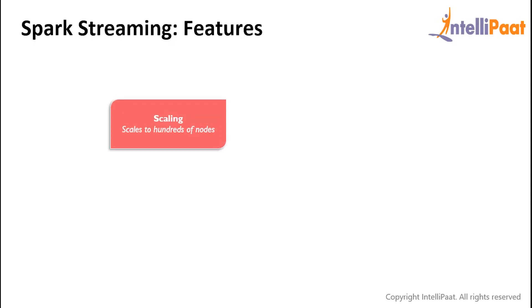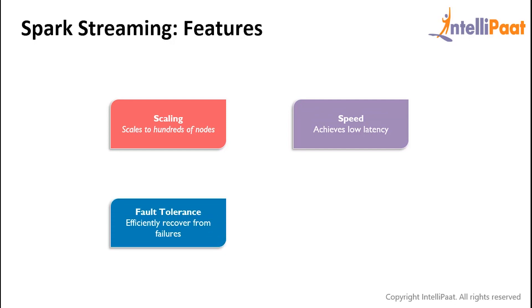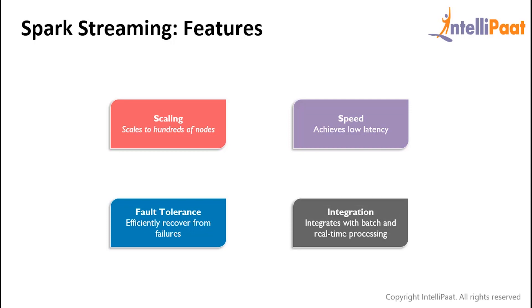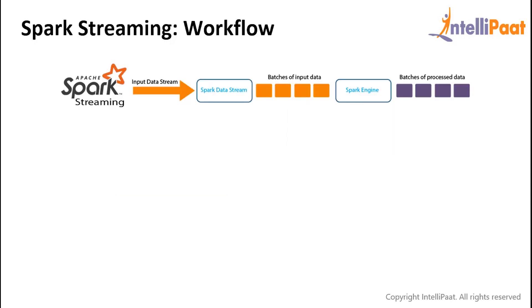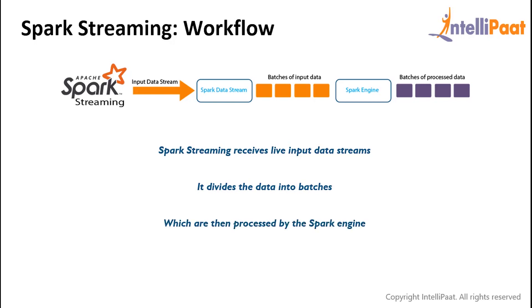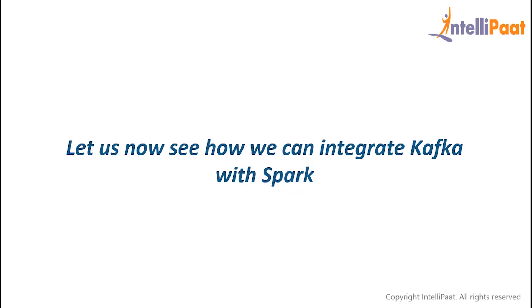Now that you understand what Spark Streaming is, let's look at some of its features. Spark Streaming is scalable — you can start processing with a single node and add more nodes as data increases. It is also very fast and helps achieve low latency. Spark Streaming provides fault tolerance — if there is any failure or error during the streaming process it can be handled without any loss of data. Spark Streaming can also be easily integrated with both batch processing and real-time processing. In terms of how it works, Spark Streaming receives live input data streams from various sources, divides the data into multiple batches which are then processed by the Spark engine, and generates the final stream of results in batches.